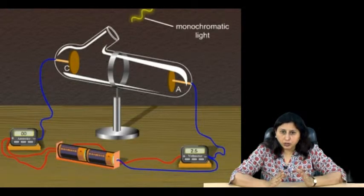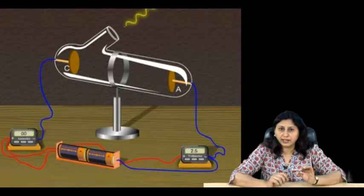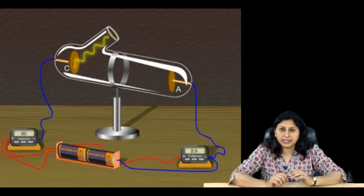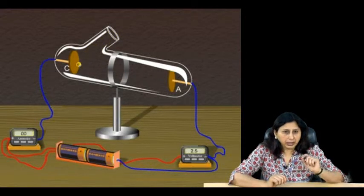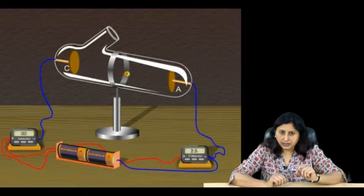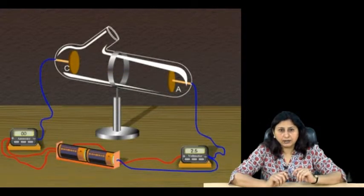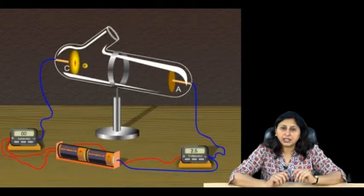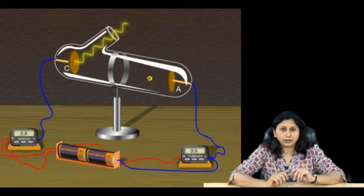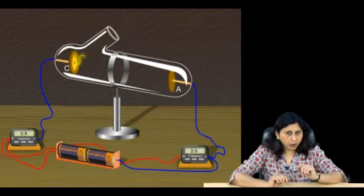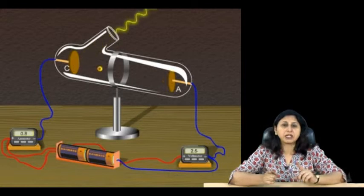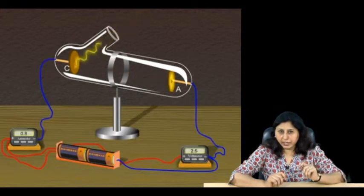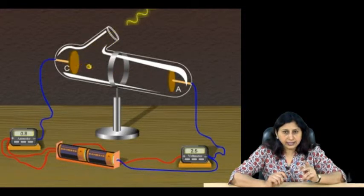Now monochromatic light from a source of sufficiently short wavelength passes through this window and falls on the photosensitive plate C, which is the emitter. Because of photoelectric effect, the electrons are emitted by the plate C and are collected by plate A by the electric field created by the battery. When the collector plate A is positive, with respect to the emitter plate C, the electrons are attracted to it. The emission of electrons causes flow of electric current in the circuit.